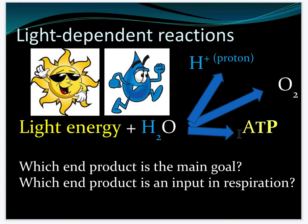So it's making energy, oxygen, and hydrogen. The main goal is to make ATP — to make energy — but what's also really important for us is that plants are kicking out oxygen as well.